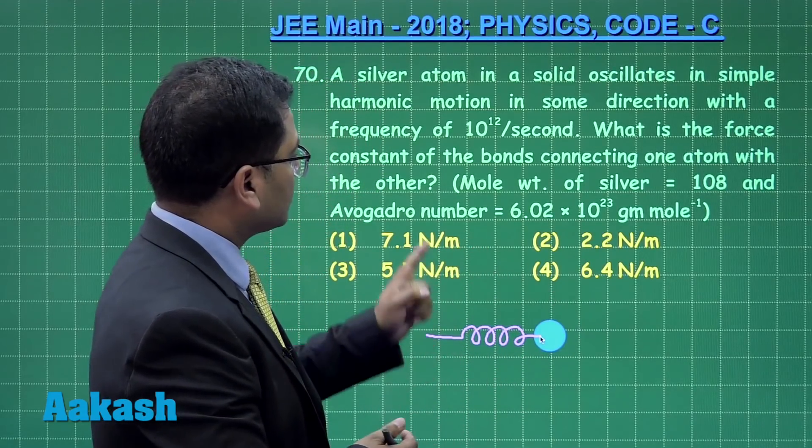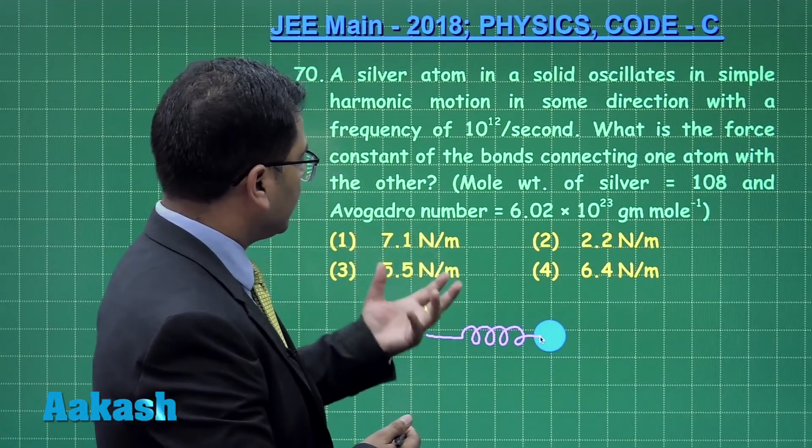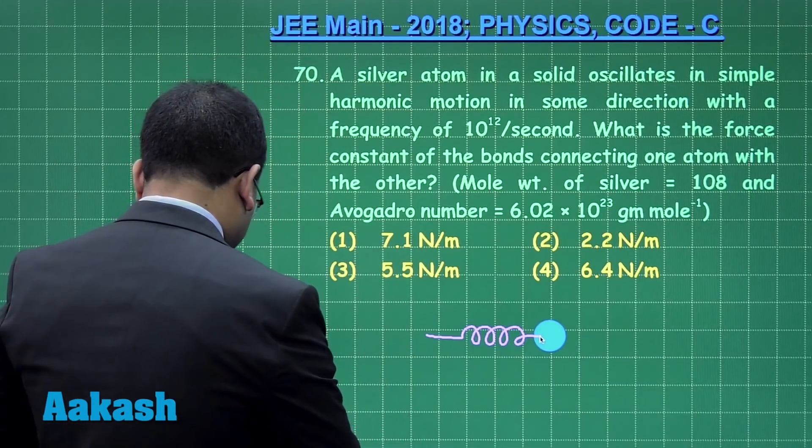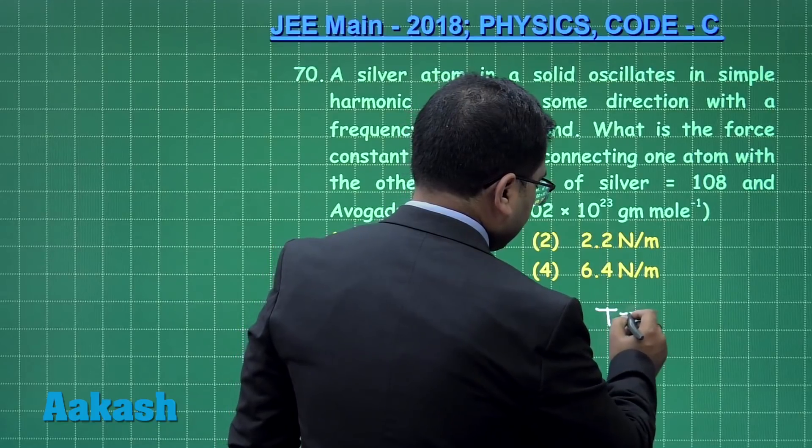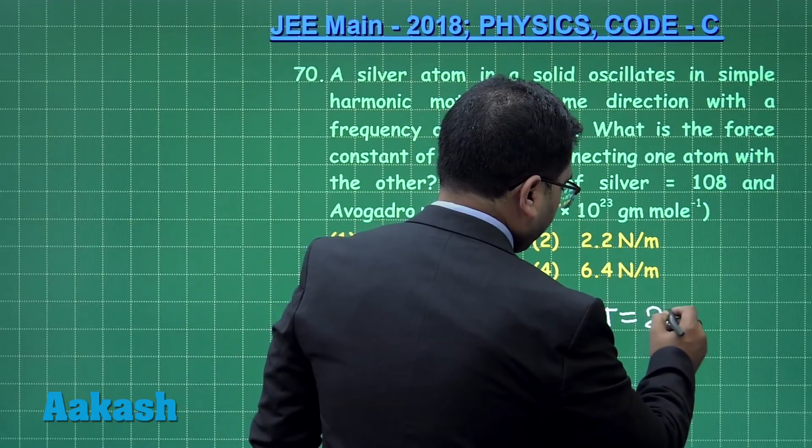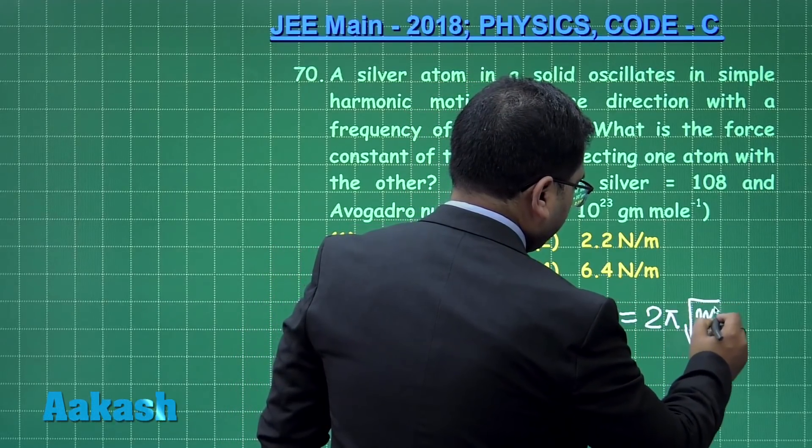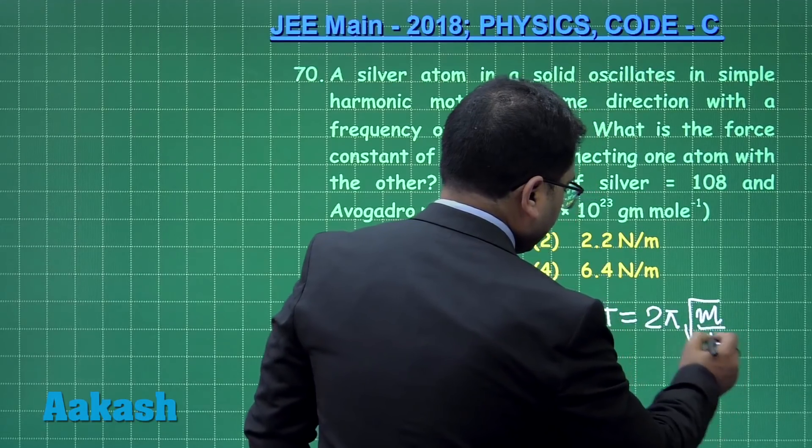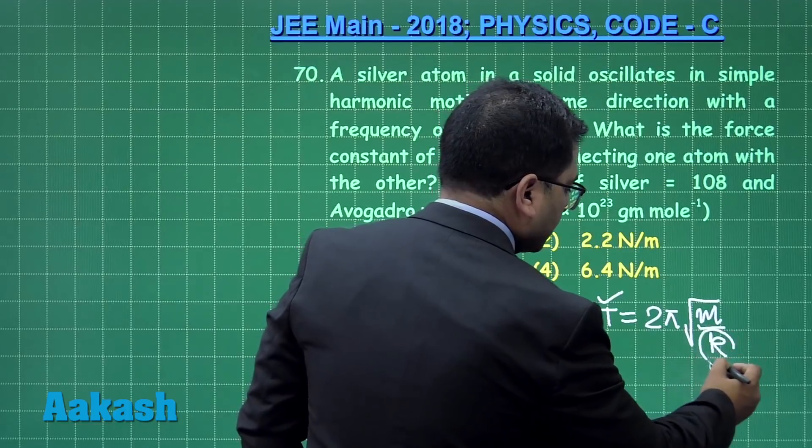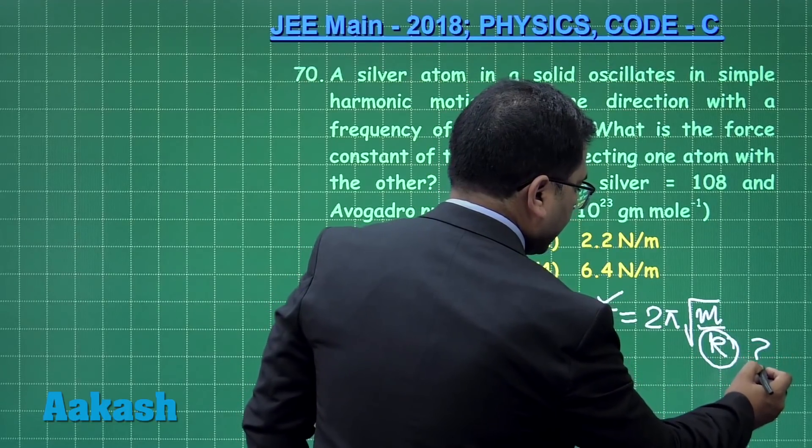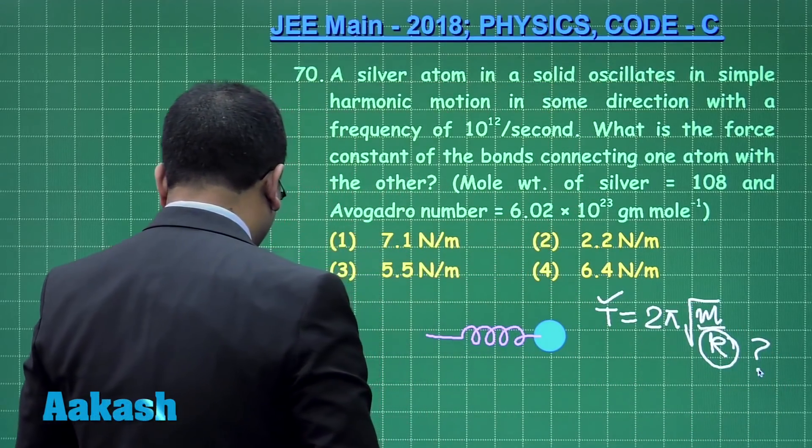For this particular question, I'll make a small indicative diagram. This is the atom and just a representation, this is the spring. Though no actual spring is present, this is a simple harmonic representation of this case. The time period is known and we need to calculate the force constant.